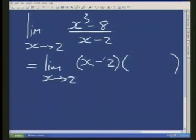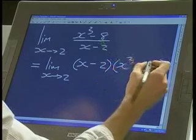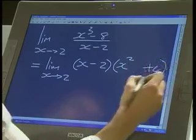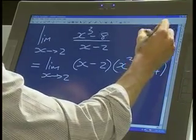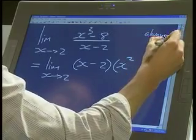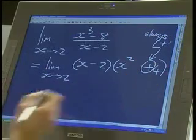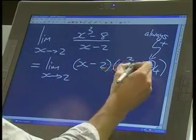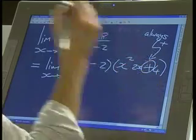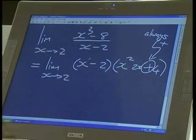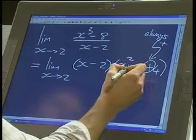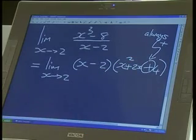Square the first term will give you an x squared. Square the last term will give you a plus 4. This is always a plus, always always always a plus. Middle term, we multiply them together, that's going to give us 2x. And this sign here will always be the opposite of whatever your first bracket was. So in this case it's going to be a plus.